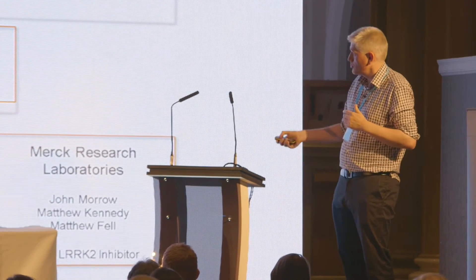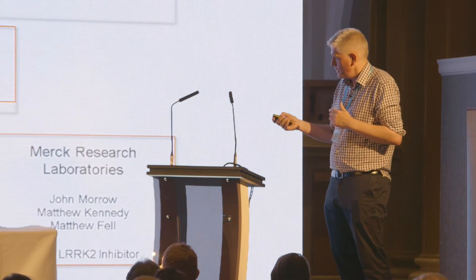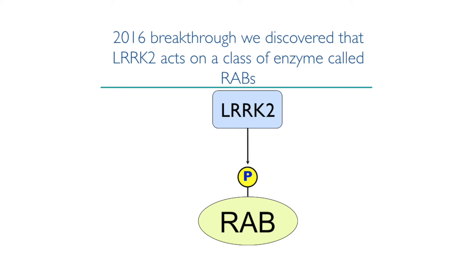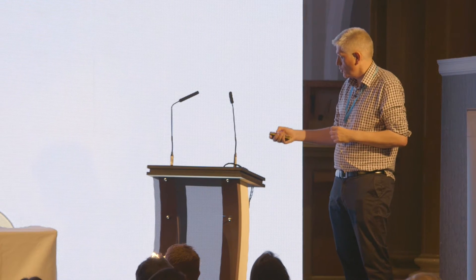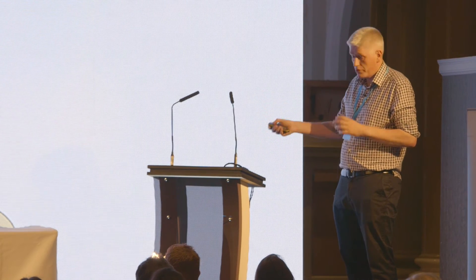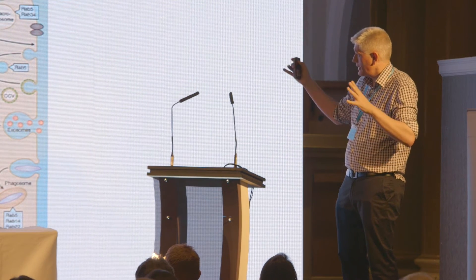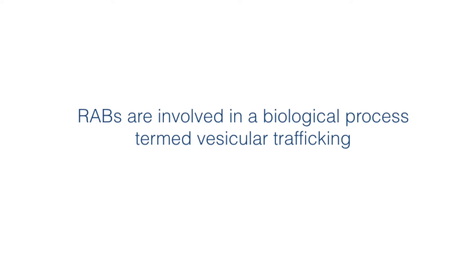That was four years of work, and I can't explain how much effort went into this from all the groups involved. We eventually published in 2016 and discovered what the key substrate was. It turned out to be another enzyme known as RAB, which had previously been implicated in Parkinson's disease. LRRK2 was shown to phosphorylate this RAB enzyme at one critical site.